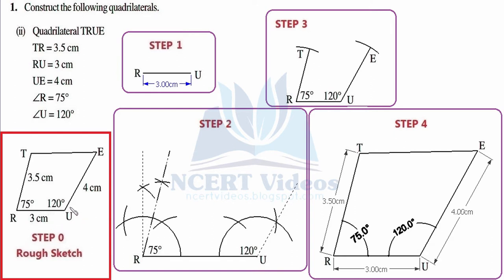We check the correctness of step zero. We need to construct quadrilateral TRUE — we have TRUE, correct. TR = 3.5 centimeter, correct. RU = 3 centimeter, correct. UE = 4 centimeter, correct. ∠R = 75 degrees and ∠U = 120 degrees — correct. So we have correctly constructed step zero and can now construct the final figure with actual measurements.